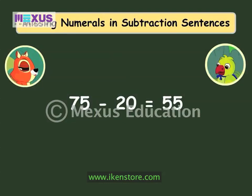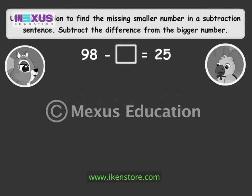We use different methods to find the bigger and smaller numbers in a subtraction sentence. Here is a subtraction statement with a missing number. You can see that the smaller number is missing. We use subtraction to find the missing smaller number in a subtraction sentence — we subtract the difference from the bigger number. Can you try, Amber?